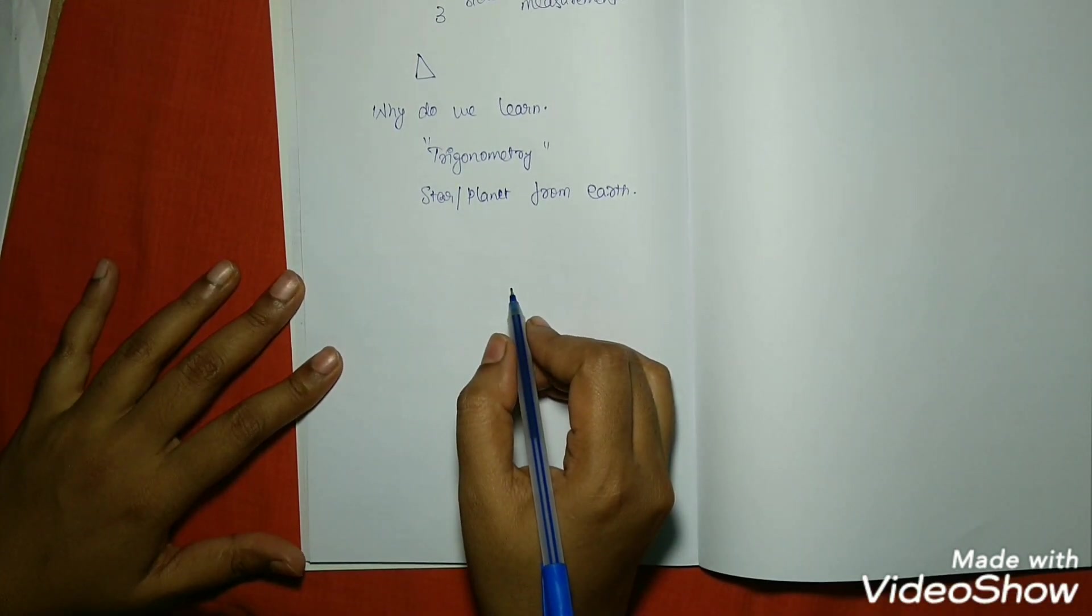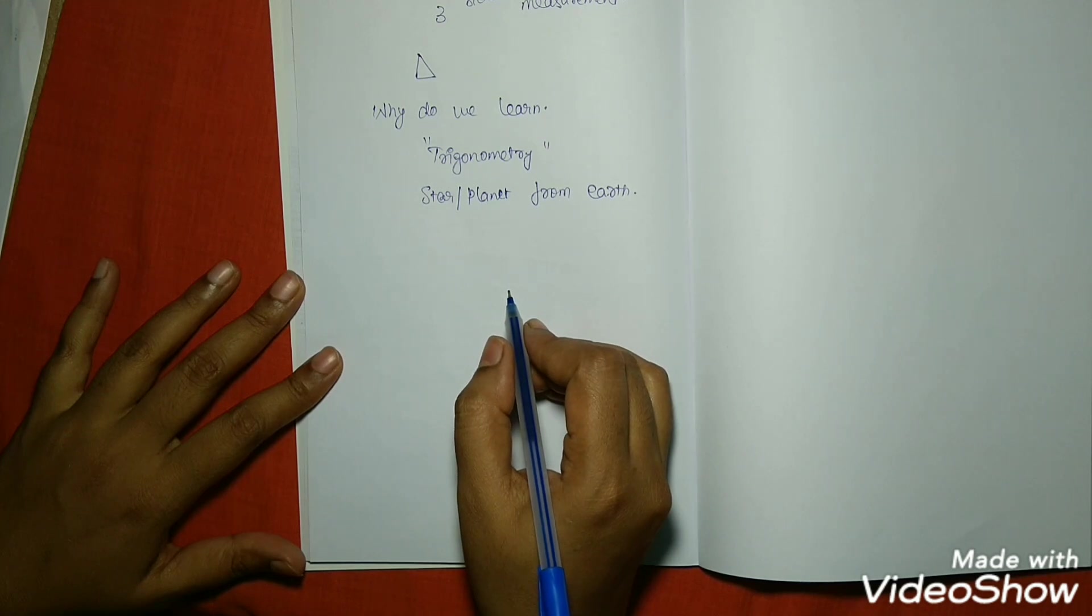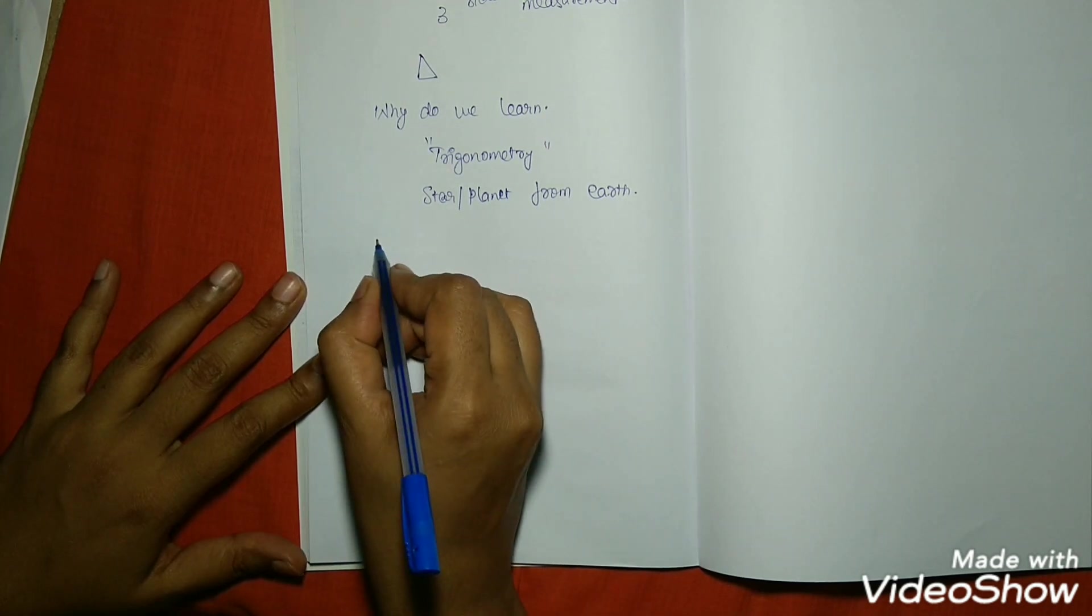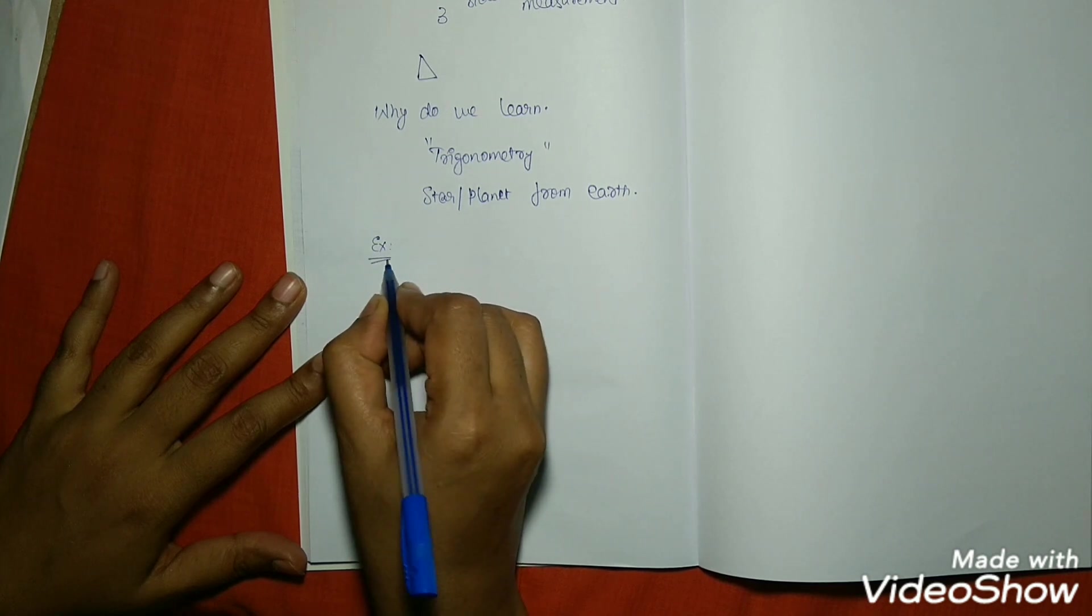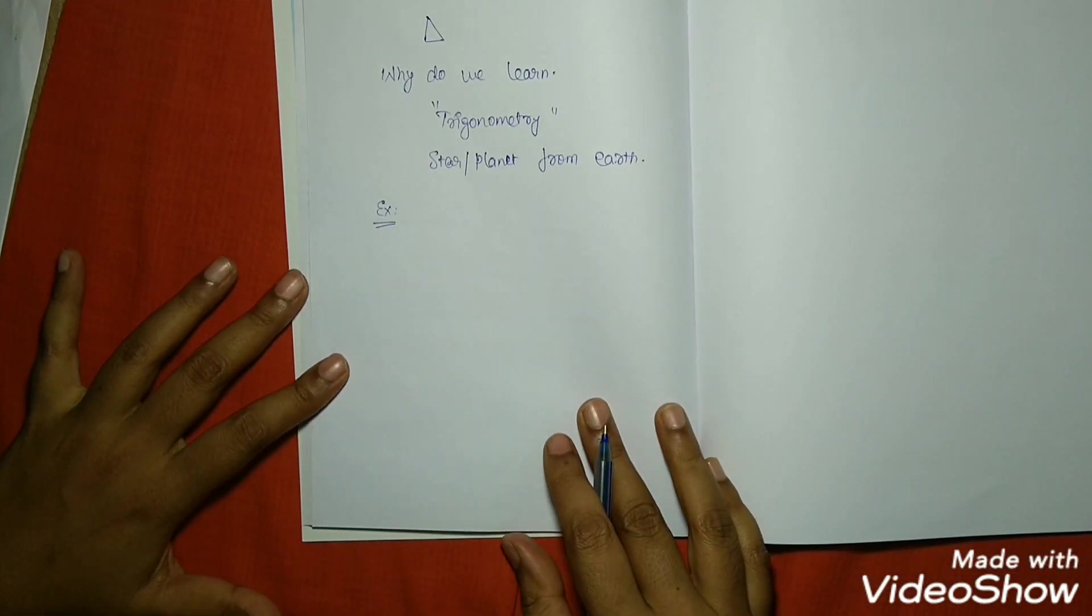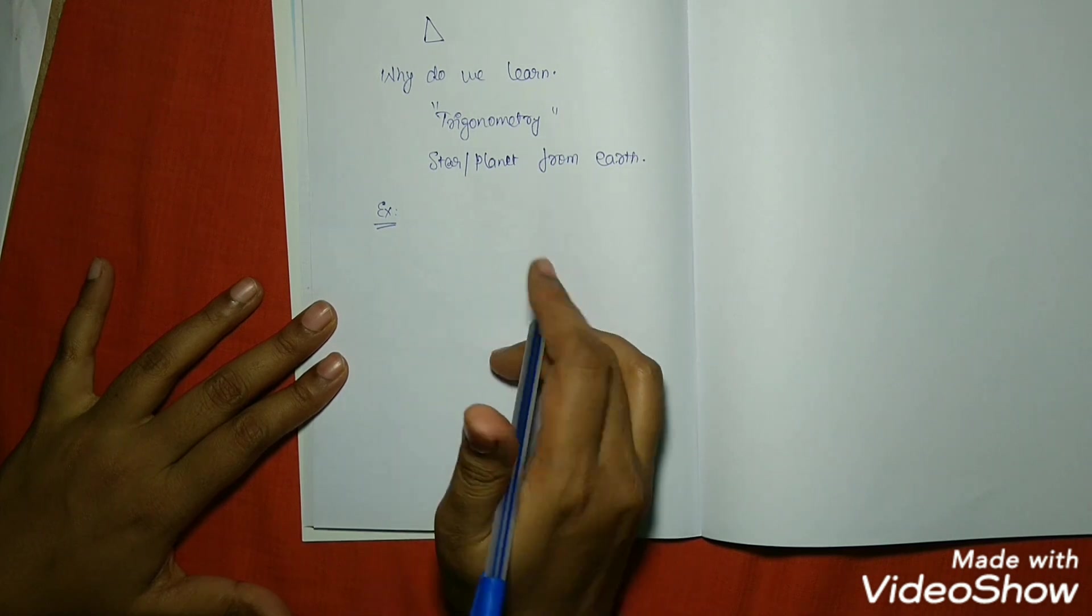Even nowadays, to locate the position of a particular object, we are using trigonometry. I will explain with few examples where we are using this trigonometry in our day-to-day life.